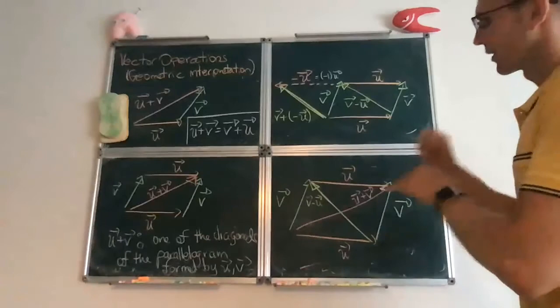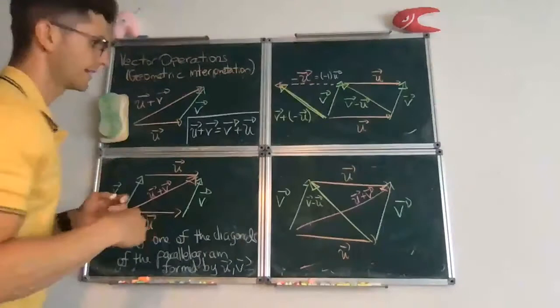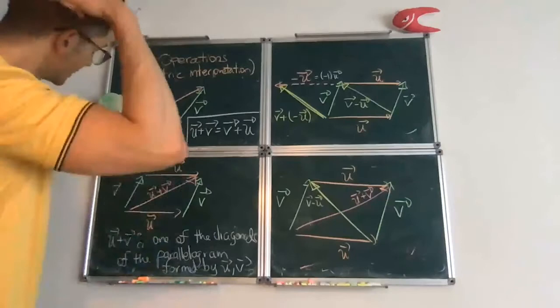So if you want the complete picture of what's going on, when you have two vectors, u and v, one of the diagonals will be u plus v, and the other diagonal will be v minus u. This is interpretation of the subtraction of two vectors. So adding two vectors gives you one of the diagonals, subtracting two vectors gives you the other diagonal.